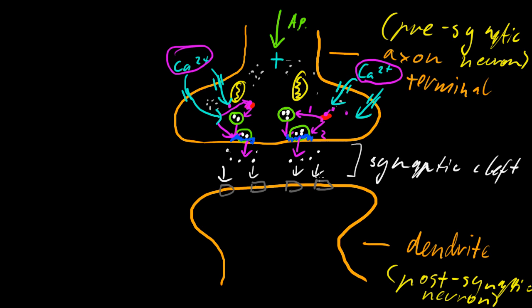So when the neurotransmitter binds, it lets through a particular ion. It might be calcium or something else. And that of course carries with it a charge. So then we've sent our electrical message. But the other way, so let me write this down. So we have the ionotropic. That's the one I just talked about. And then we also have metabotropic.